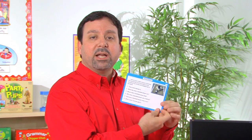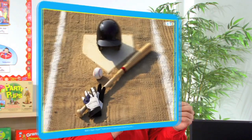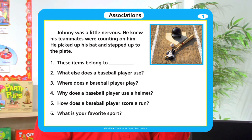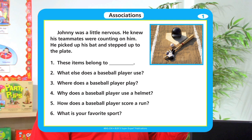This would be for associations. The way we use this card deck is we show the student the picture on the front and ask question one. On the back we have our story and then our six questions. We show the student the picture and ask item number one: these items belong to blank, and the student fills in who they think these items belong to. For additional inferencing and language practice, we read the short story and then ask the five remaining questions.